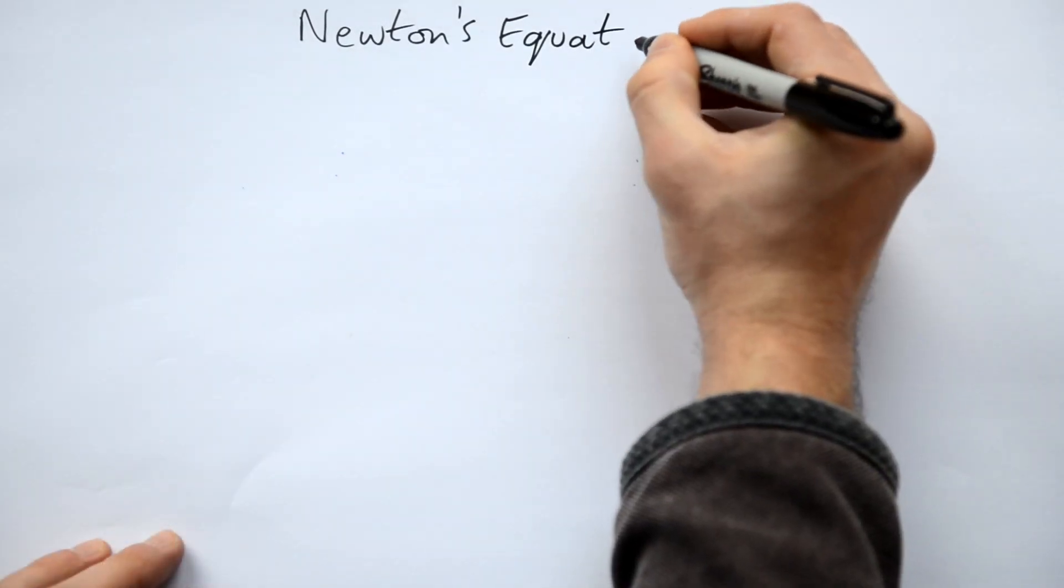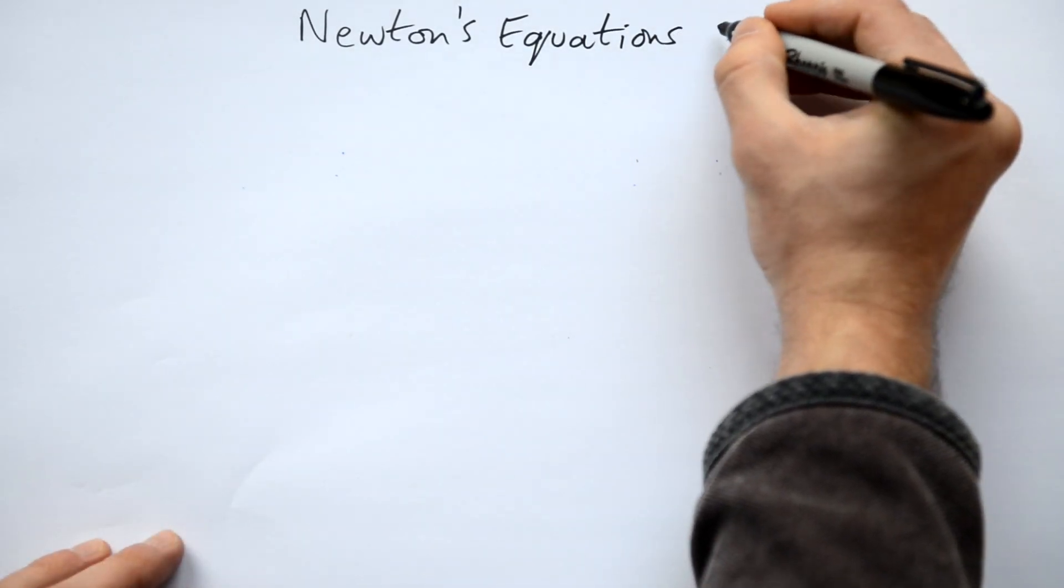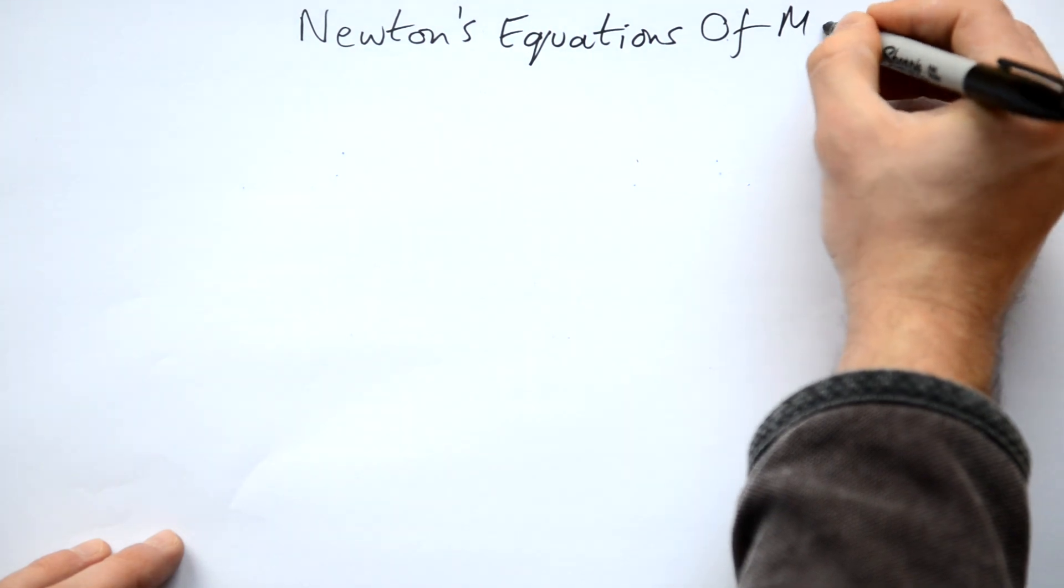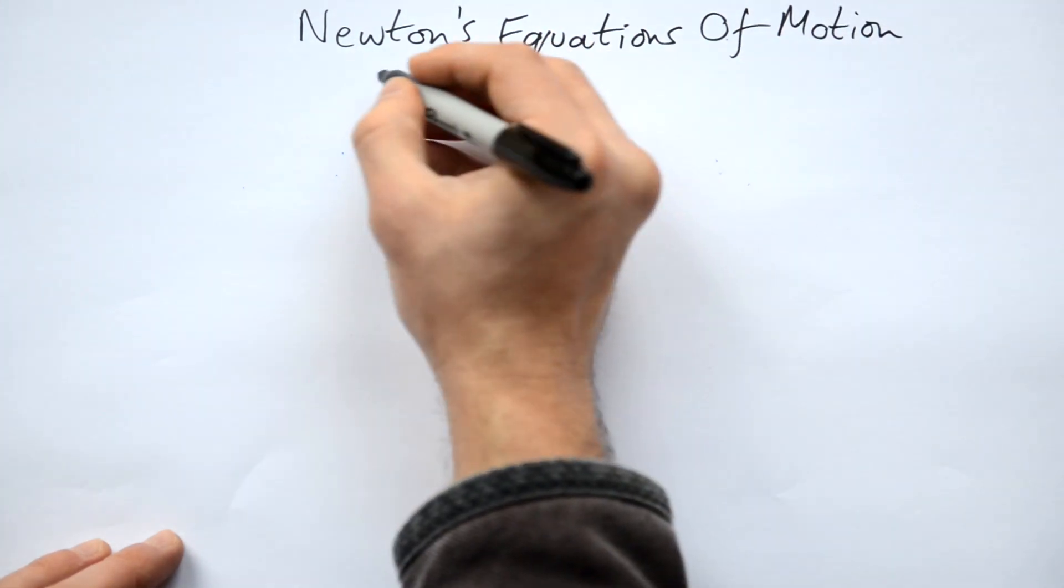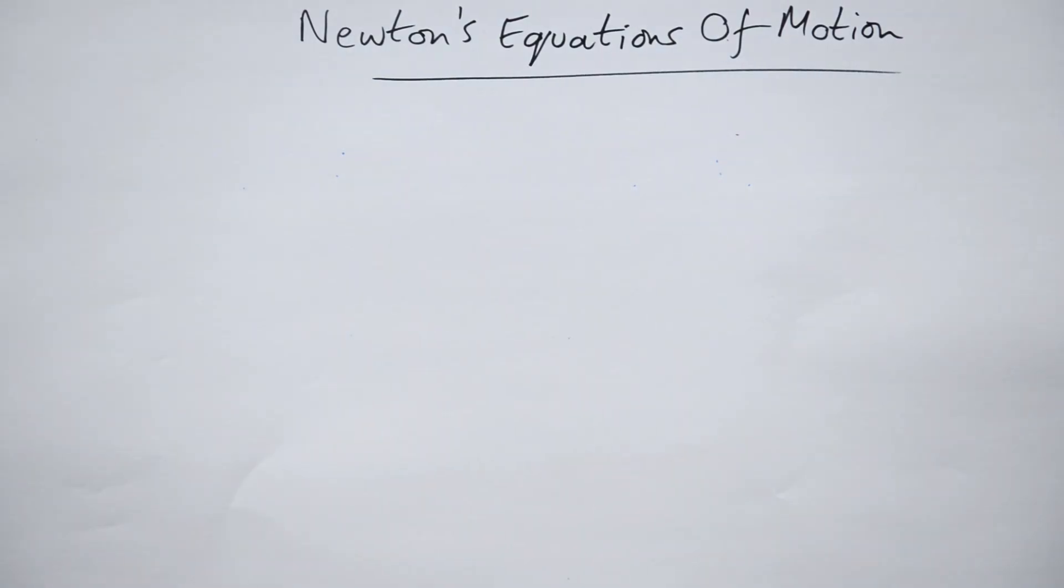So how do these five things relate to each other? Well, enter Newton and his equations of motion. Now as there are five variables in any SUVAT scenario, S, U, V, A, and T, then we need four equations if we're going to relate all of them together.